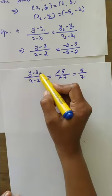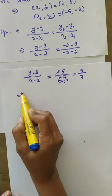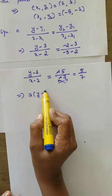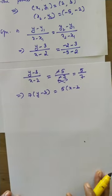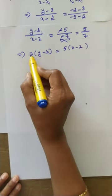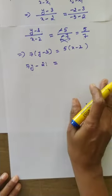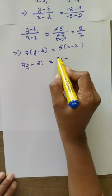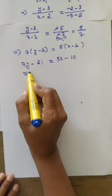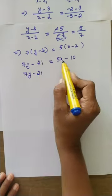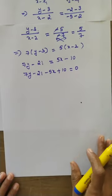Minus 2 minus 3 is minus 5, divided by minus 5 minus 2 is minus 7. The negatives cancel, giving 5 by 7. Now cross multiply: 7 into (y minus 3) is equal to 5 into (x minus 2). So 7y minus 21 equals 5x minus 10. Take all terms to the left side — 5x becomes minus 5x, minus 10 becomes plus 10, equal to 0.